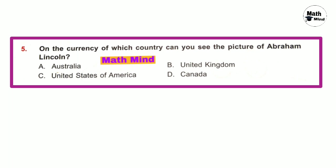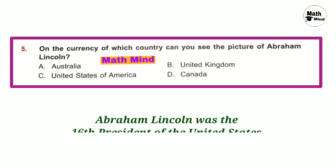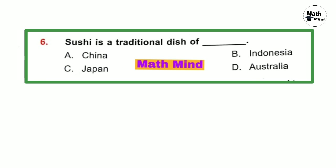Question number 5: On the currency of which country can you see the picture of Abraham Lincoln? Abraham Lincoln was the 16th President of the United States. Option C is correct — United States of America. Question number 6: Sushi is a traditional dish of which country?